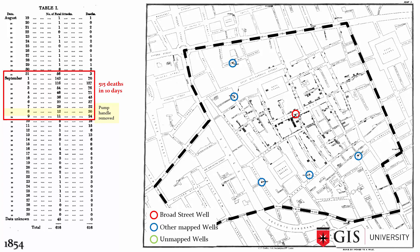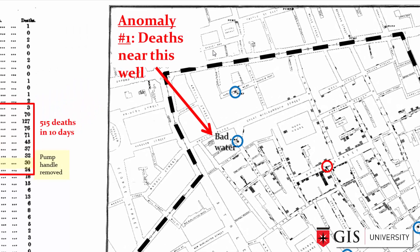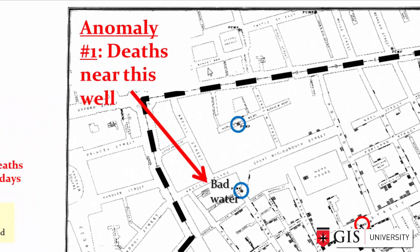He noticed five major anomalies that required explanation if his hypothesis was to be supported. So he put on his boots and interviewed local residents. Here's another GIS parallel: thematic maps should not be taken at face value — they do require field validation. Field work is important, and you will really see that by the end of these next few slides.